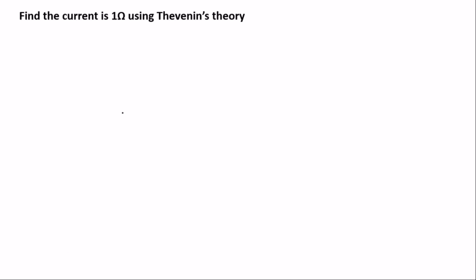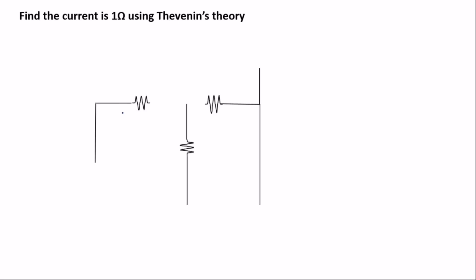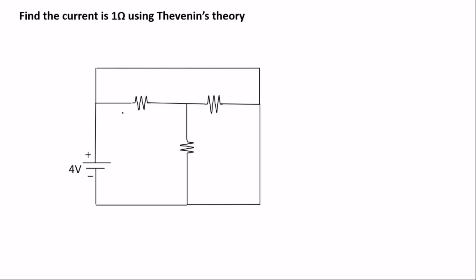This is the circuit diagram given to us, and we are asked to find the current in this one-ohm resistor using Thevenin's theory. Note we have a current source here and a current source here, so please make sure you watch this video to the end.